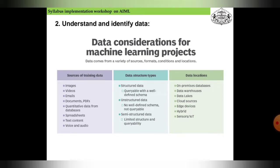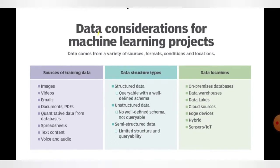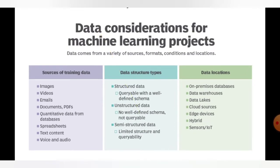Now, data consideration for machine learning projects. There are three columns: source training data, data structure types, and data locations. The source training data consists of images, videos, emails, documents, PDFs, spreadsheets, text content, voice and audio, etc. This is the source of the data we are collecting.